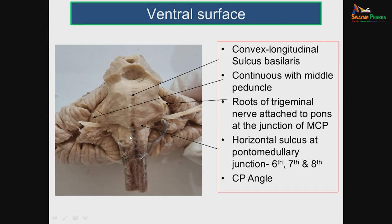At the pontomedullary junction, going from medial to lateral, the cranial nerves are: the sixth (abducent nerve), then the facial nerve, then the vestibulocochlear nerve. So from medial to lateral, the sixth, seventh and eighth cranial nerves are attached at this pontomedullary junction.